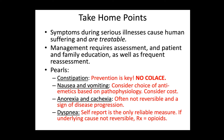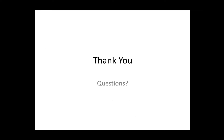For nausea and vomiting, base treatment on the pathophysiology to the extent you can — choose the drug most closely linked to that pathway, and always consider cost, since some of these drugs are shockingly expensive. Anorexia and cachexia are often not reversible and are signs of a systemic inflammatory process and disease progression. For dyspnea, self-report is the only reliable measure; if the underlying cause isn't reversible and won't respond to Lasix or bronchodilators, the treatment is opioids.